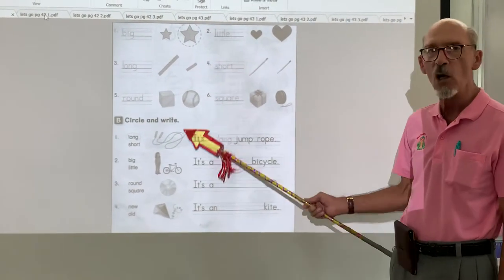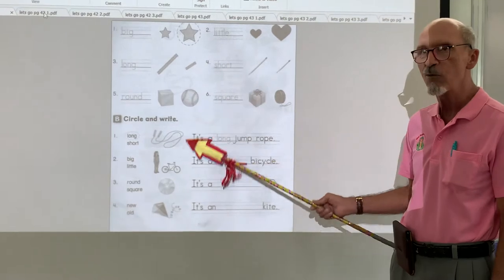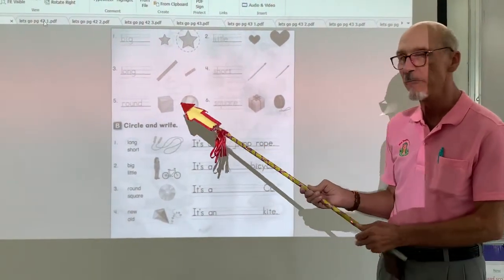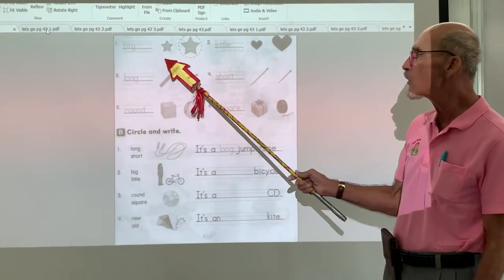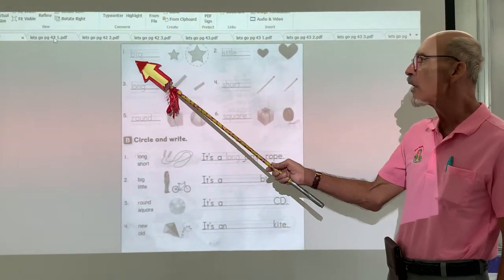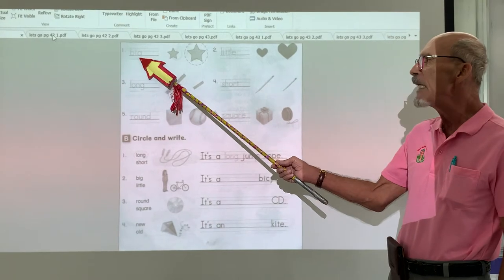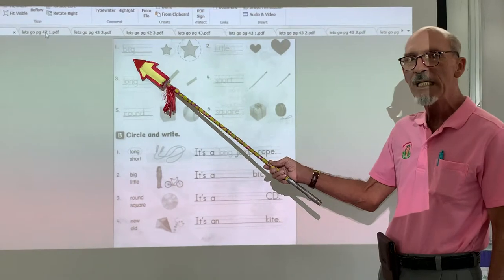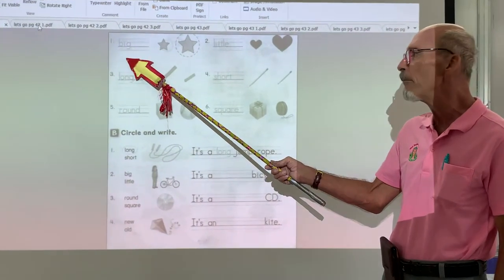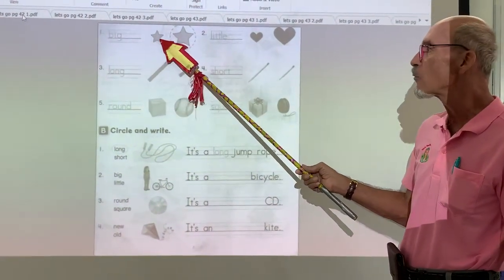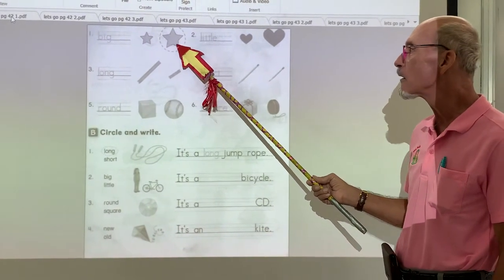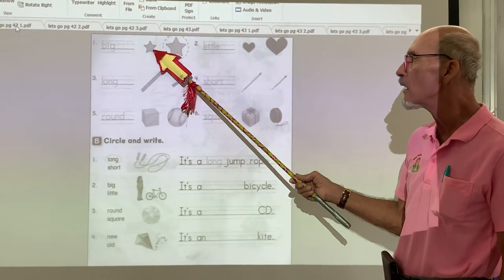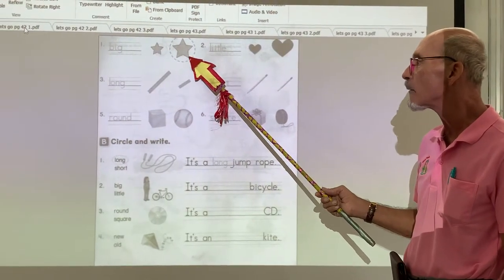This is your Let's Go textbook, page 42, okay? And we're just going to talk about some vocabulary. Looking at these words, look at number one. B-I-G, big. This is what? Small. This is big. This is little. This is big.